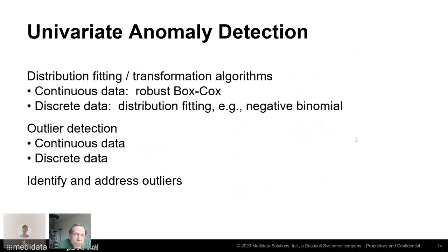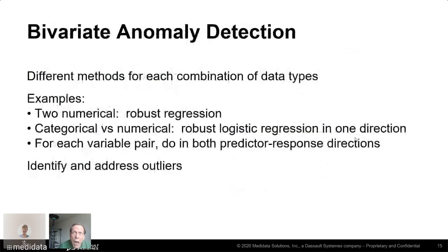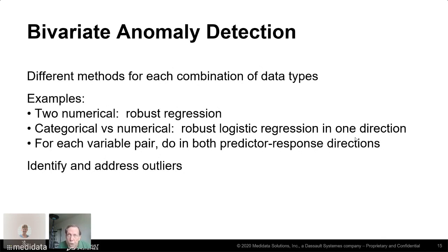Detecting univariate anomalies is standard outlier detection. Bivariate anomaly detection is more complicated because it's possible that each individual variable looks fine, but the pair together looks odd — for example, someone who is four-foot-nine and 300 pounds: either measurement might be plausible alone, but together, not so much. We need different methods for each combination of data types, and this is where R's flexibility allows us to do different things for different kinds of variables. For each variable pair, we should treat each as predictor and response in both directions for symmetry.